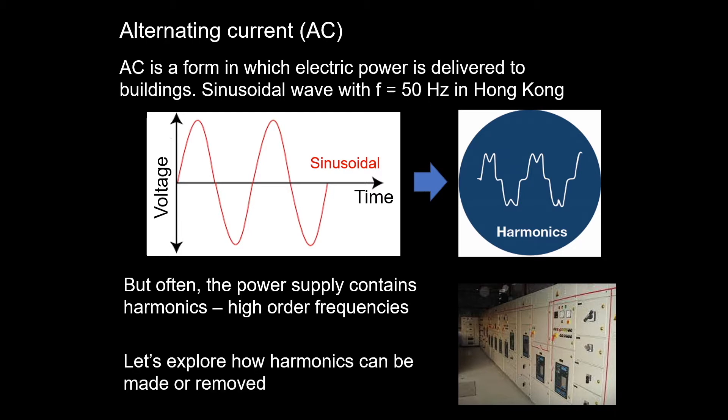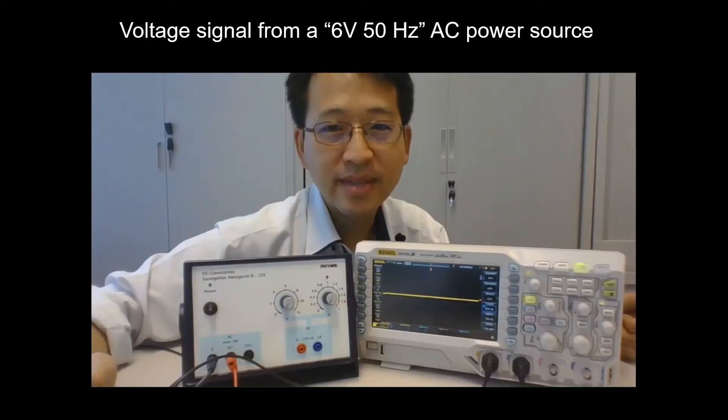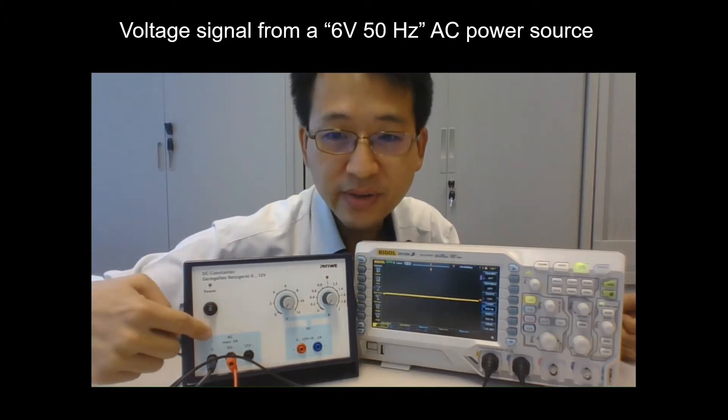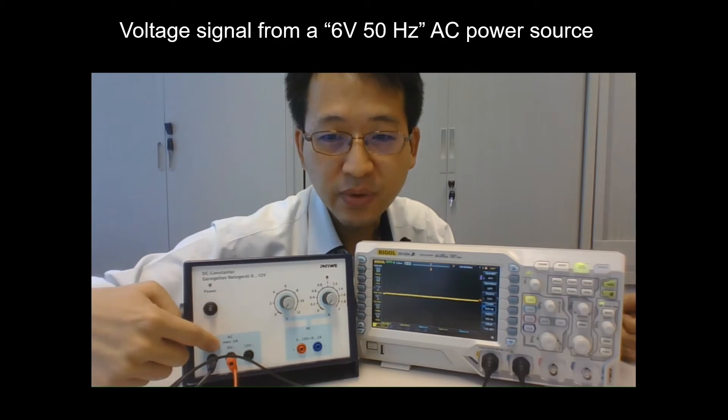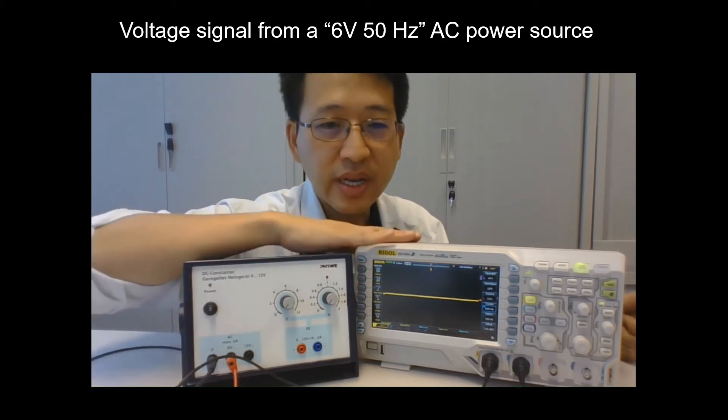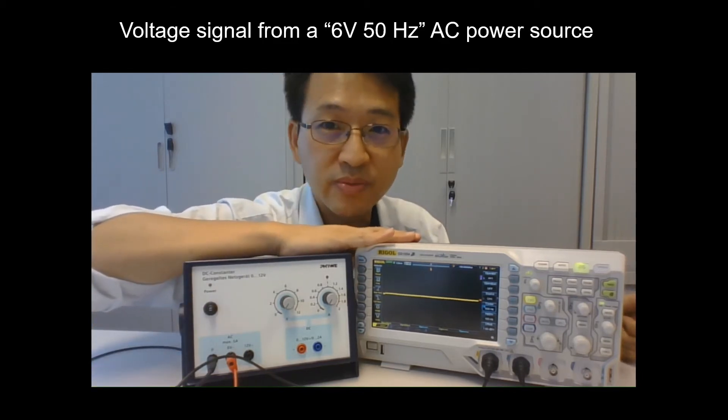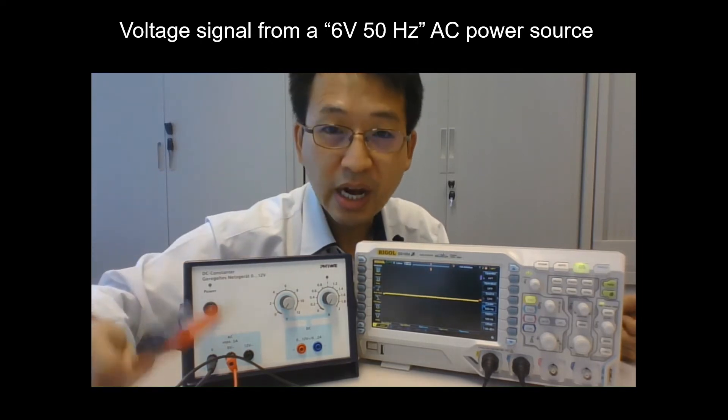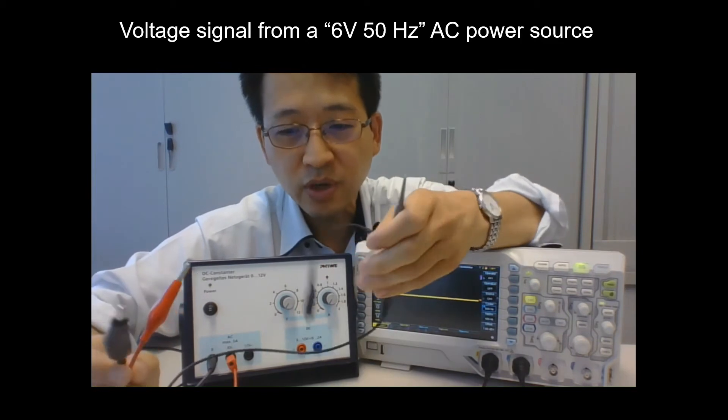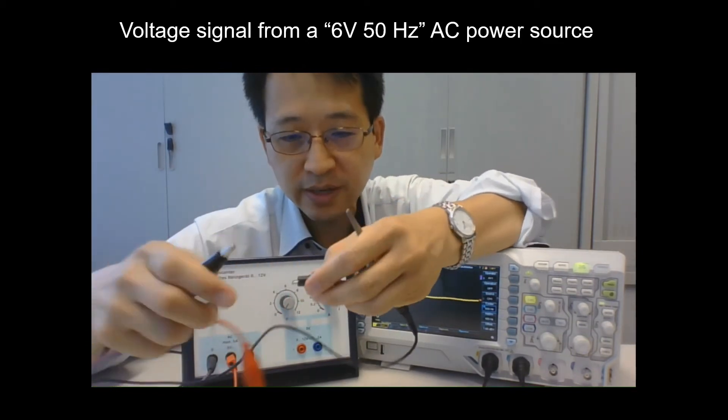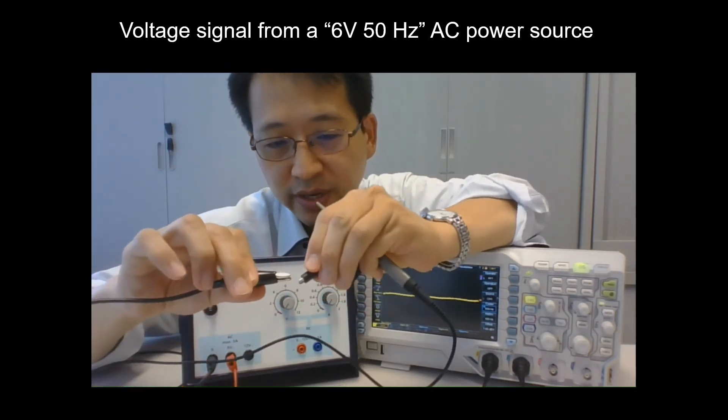With me here is a power source that can give out a 50 Hertz AC signal with about six volts, and on the right hand side is an oscilloscope that we can use to visualize the signal. The first thing we're going to do is connect the output of the power source to the probe of the oscilloscope so you can see how the signal looks like.